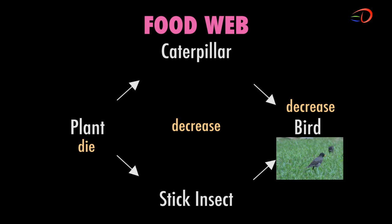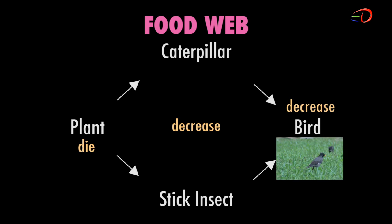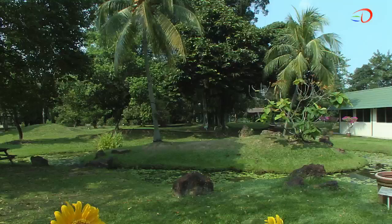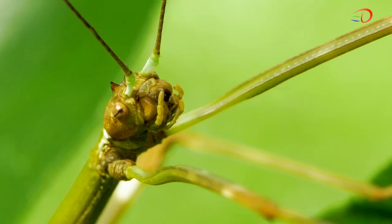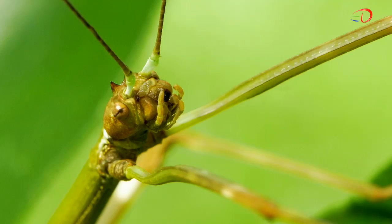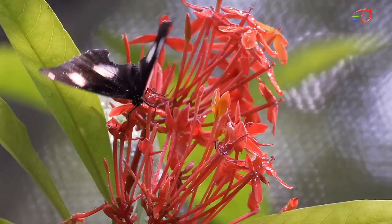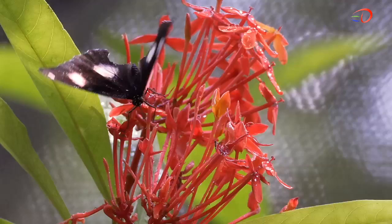Now, you can see how the organisms interact with one another within a habitat. We have also learned that the relationship between organisms can be represented in a food web or food chain. The next time you visit a garden habitat, look around and you may just be able to group the different organisms into food chains and food webs.